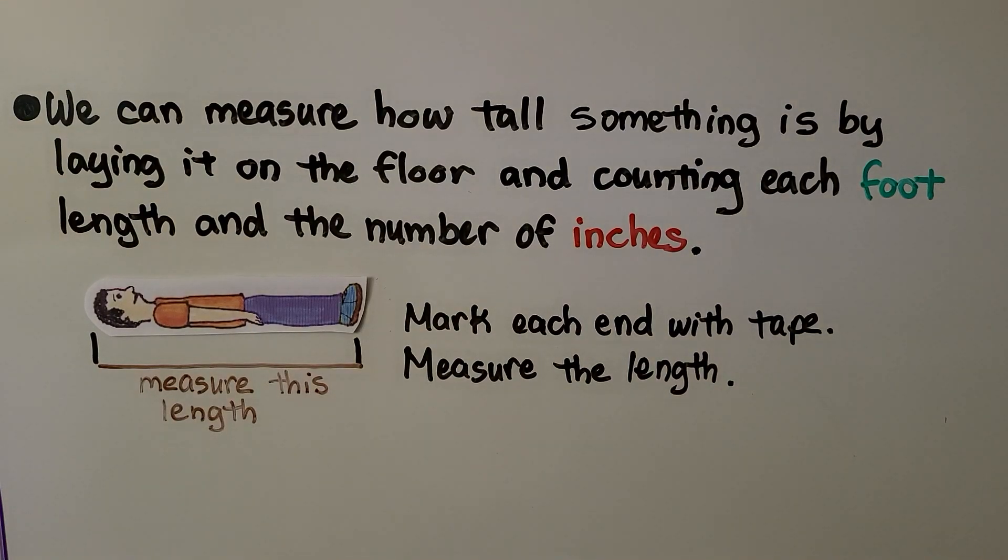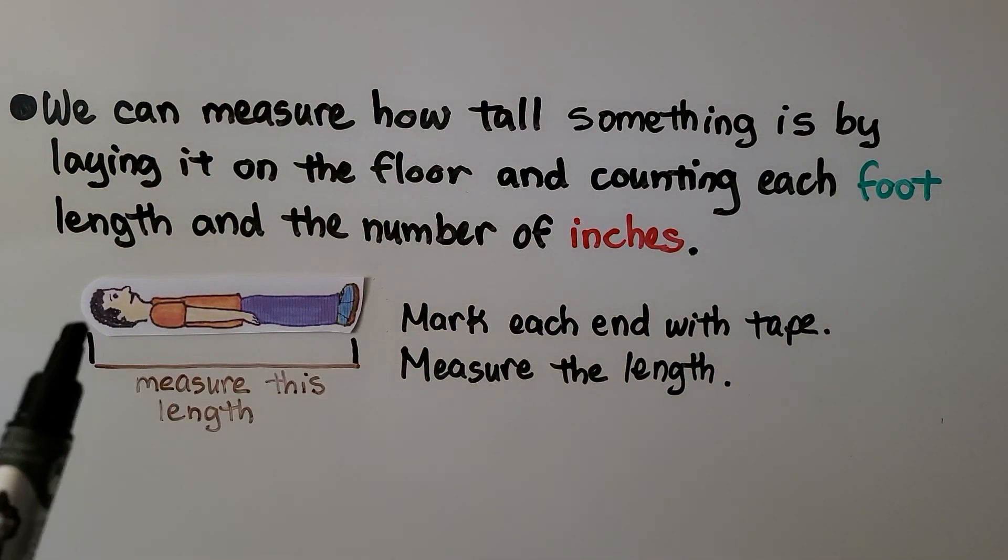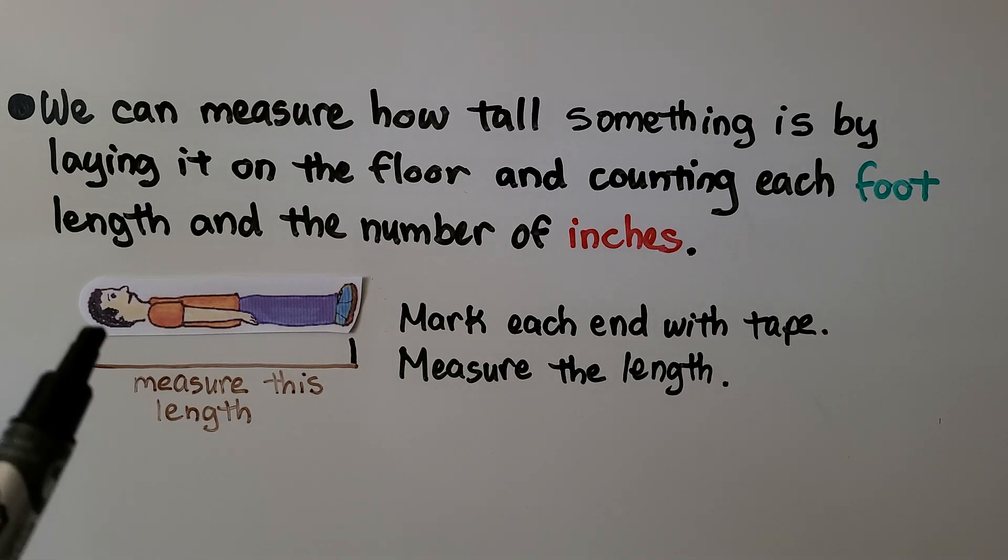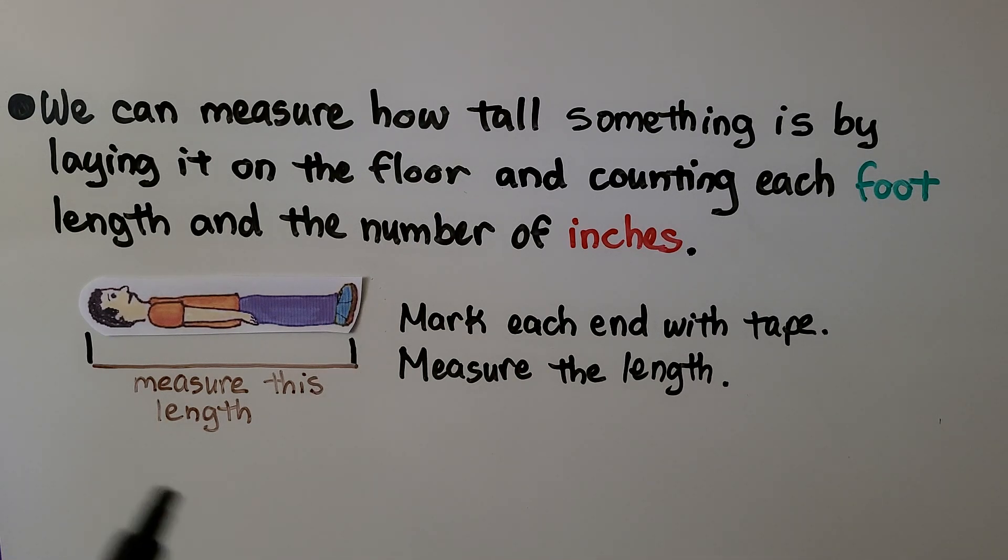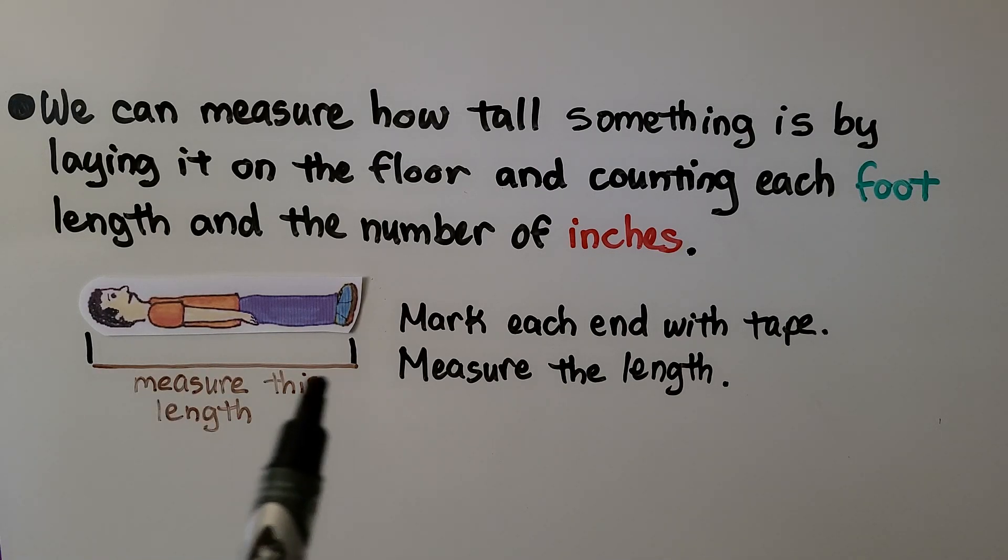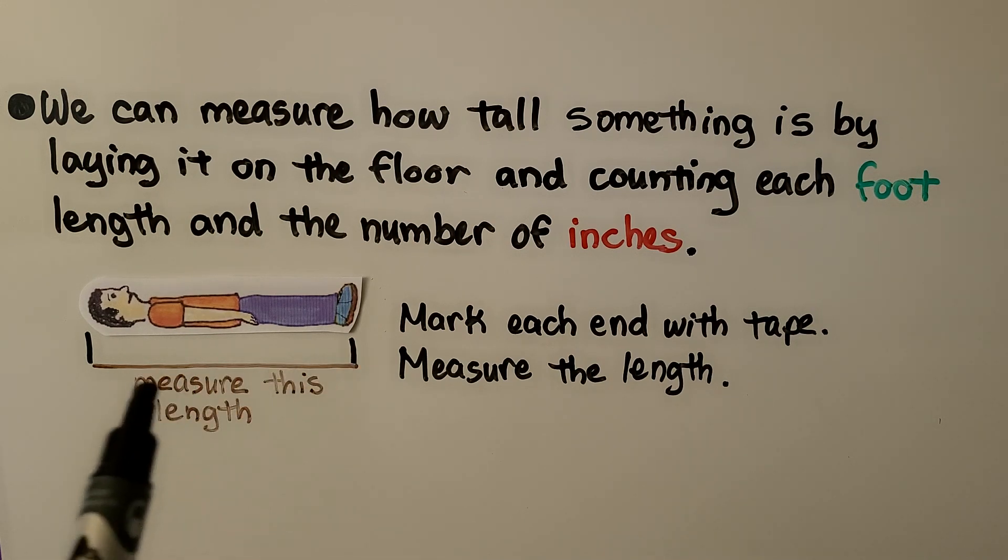We can measure how tall something is by laying it on the floor, even a person. We mark each end with tape at the head, the foot, or the end of the object. Then we measure the length between our pieces of tape. We count the number of feet and the number of inches, and we have the height.